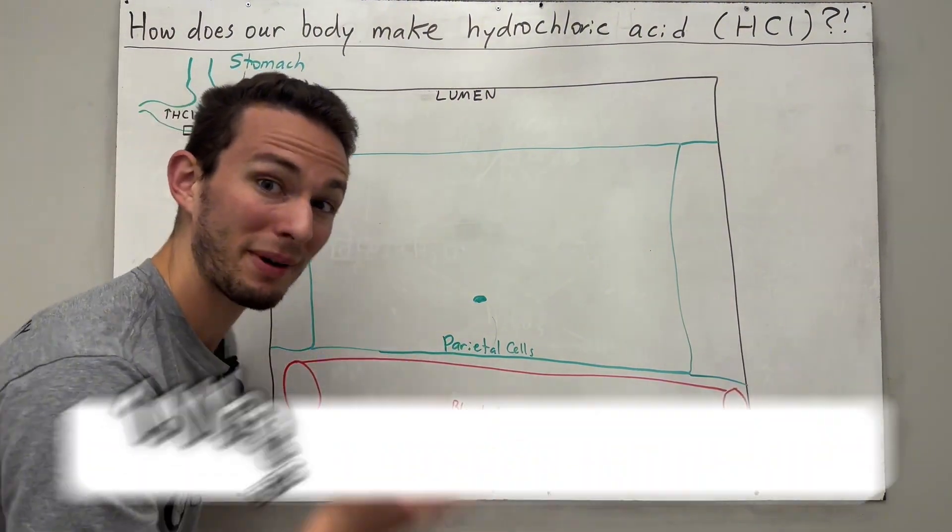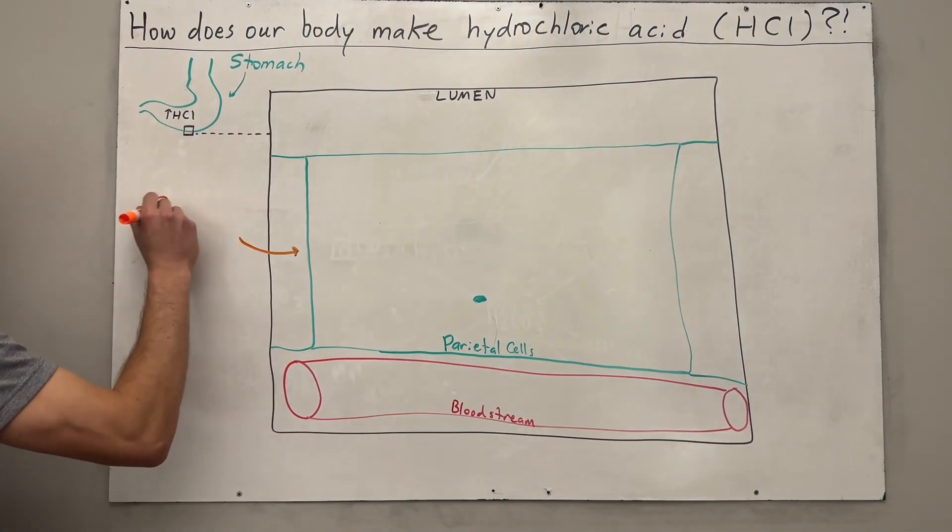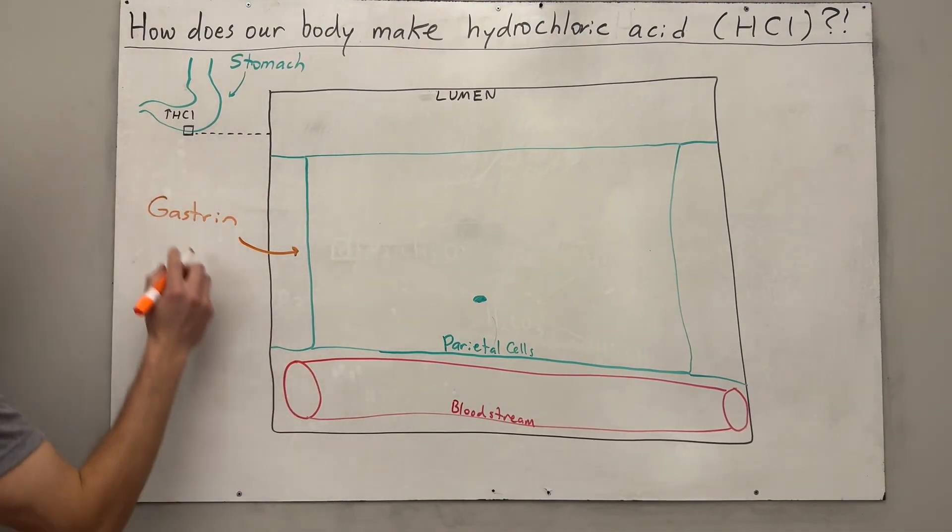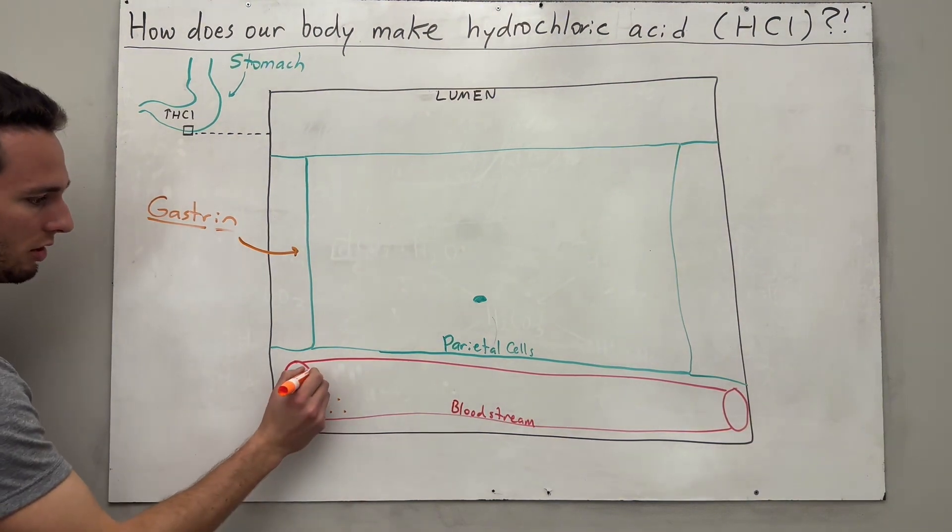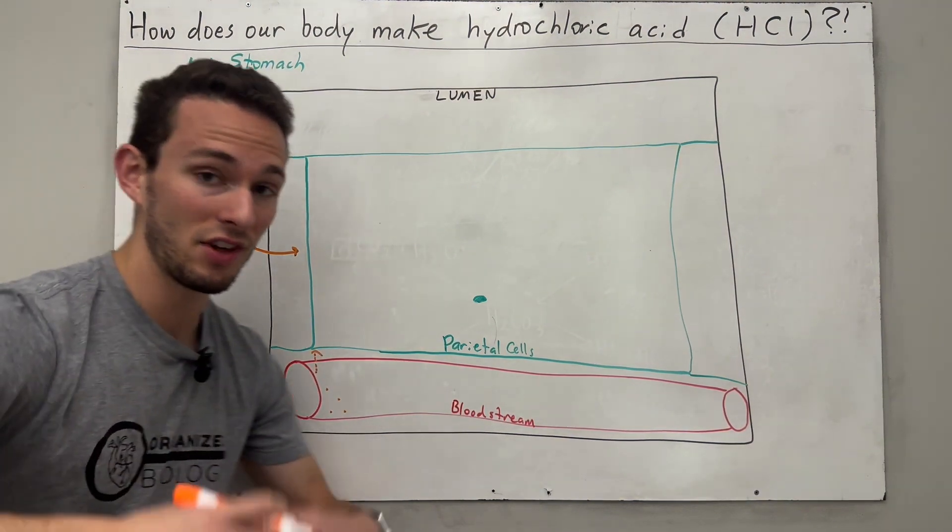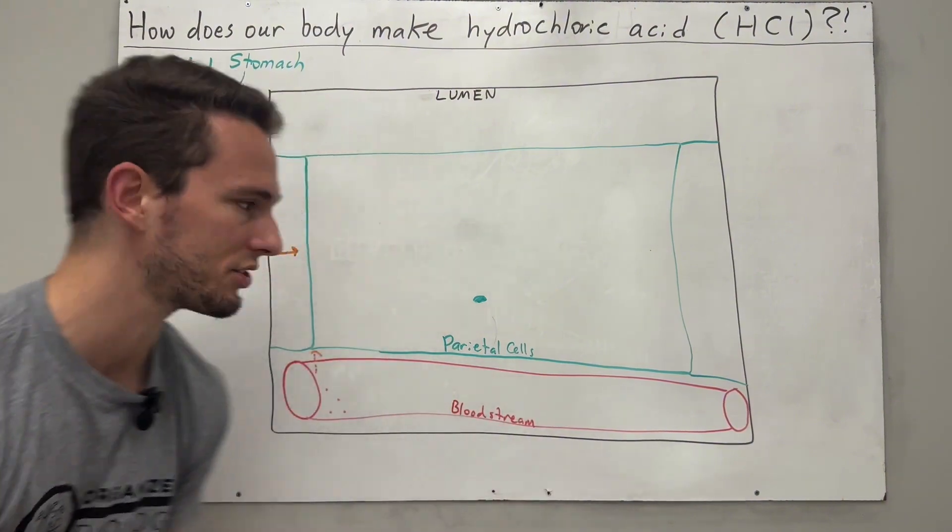These cells will be stimulated by three different stimuli. Number one being a hormone gastrin, which literally translates to the stomach hormone. So this will be chilling out in the bloodstream. And it will communicate to these parietal cells that hey, there's food coming in, we need to start producing hydrochloric acid.